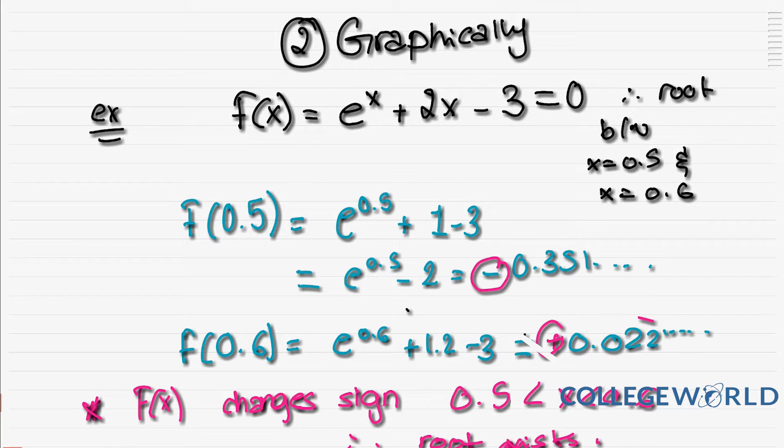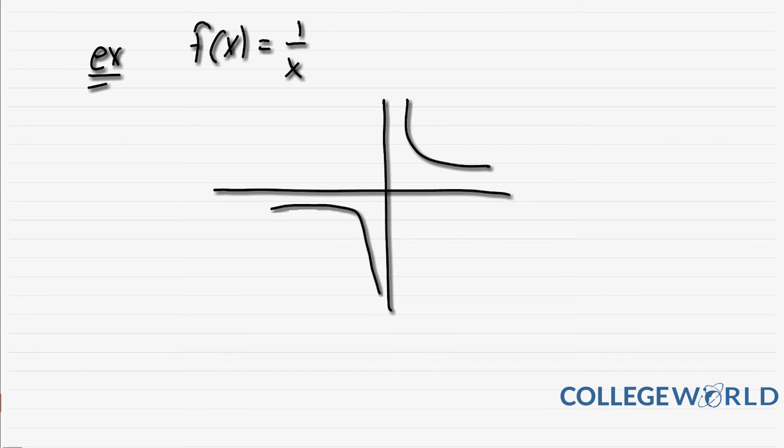However, I want to add something: when there is a change in sign, it can also mean that there's a discontinuity. This is the only exception. What do I mean by discontinuity? Our famous example f(x) = 1/x. Here the graph is going to be something like this. You know that here this is positive and here there is negative.